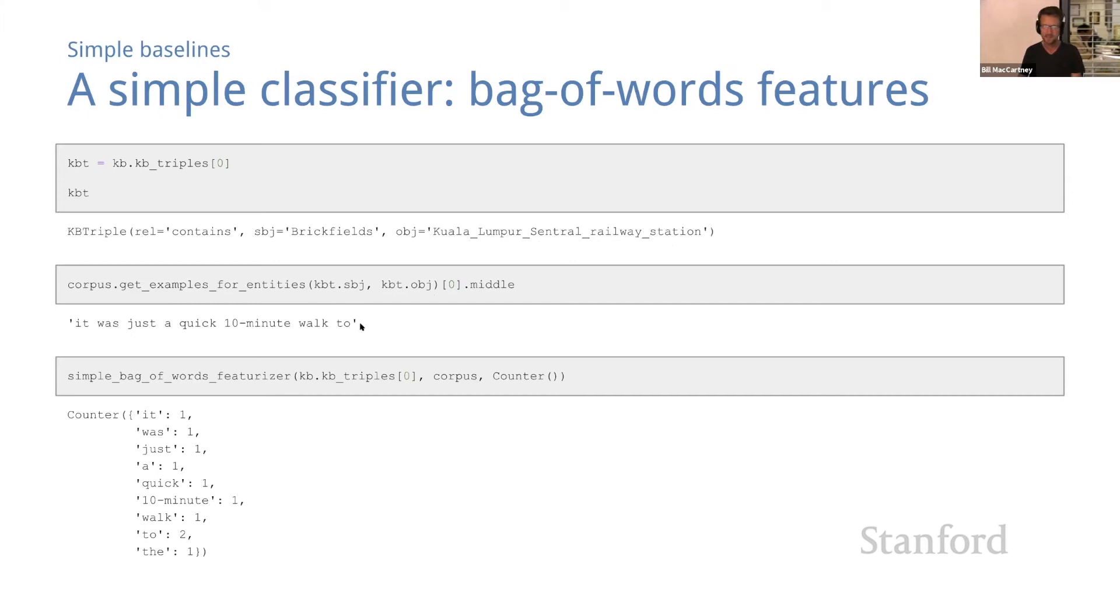So I guess the full example probably said something like 'from Brickfields it was just a quick 10 minute walk to Kuala Lumpur Central Railway Station.' Now let's run our featurizer on this KB triple and see what features we get. So we get a counter that contains 'it was just a quick 10 minute walk to the.' So it looks like it's counted up the words in that middle, which is just what we expected. But if you look closely there's something unexpected here, because the word 'to' has a count of two even though it appears only once in that middle. And also the word 'the' has a count of one even though it didn't appear in that middle at all.